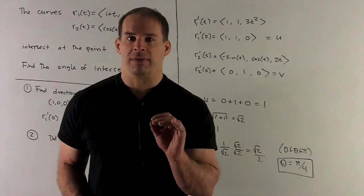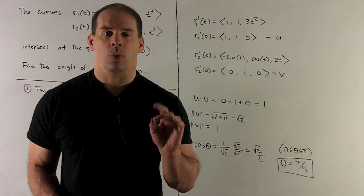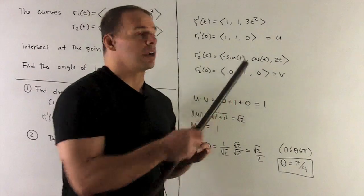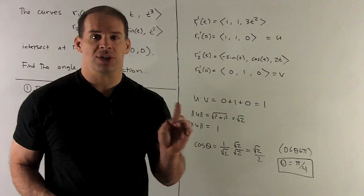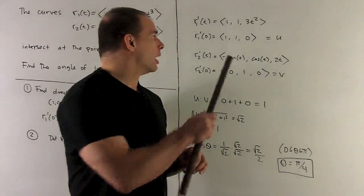So I take my derivative of R1. What do we get? We're going to have (1, 1, 3t squared). We put t equals 0 into there. So we're going to get the direction (1, 1, 0). I'll call that u.